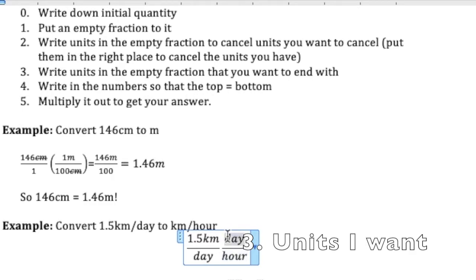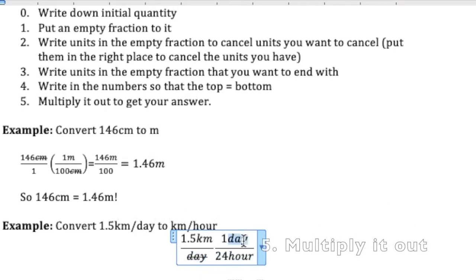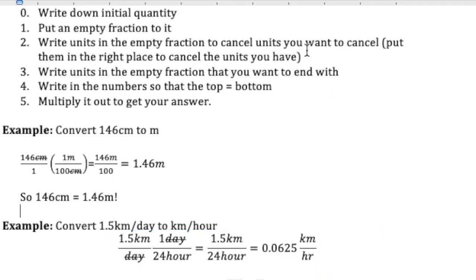How many hours are in a day? Hopefully, you know that one day is the same as 24 hours. So now we multiply it out. And we know that the days cancel with the days. So I get 1.5 kilometers over 24 hours, which in a calculator gives me 0.0625 kilometers per hour.